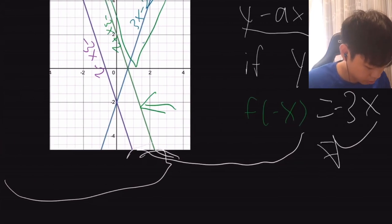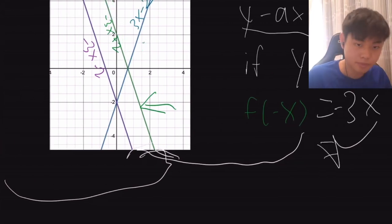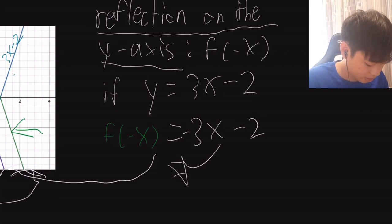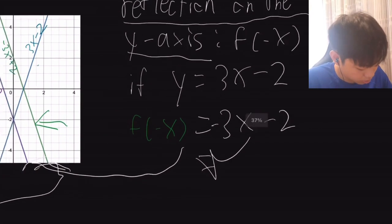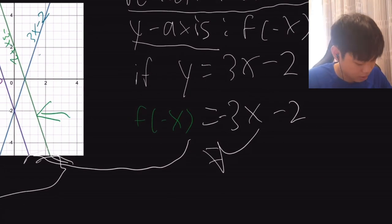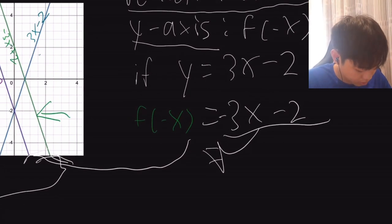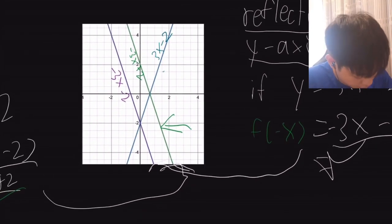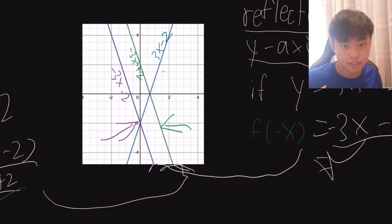To reflect on the y-axis, we use f(-x). If y equals 3x-2, then f(-x) equals -3x-2, which gives the purple line here. As you can see, it's reflecting on the y-axis, and that's it for linear equations.